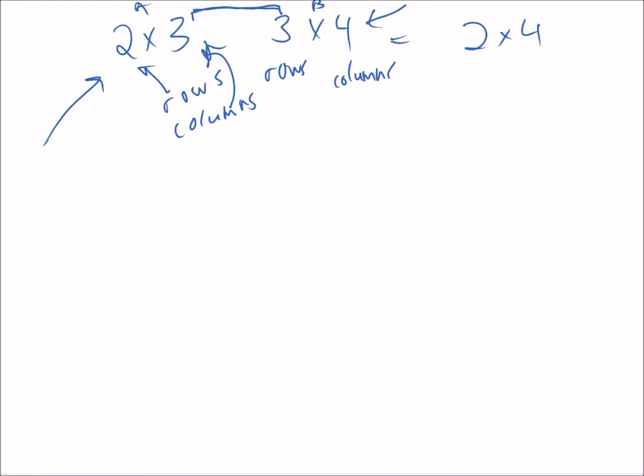When this happens, the resulting matrix will be 2 by 4. If this happens we say that the product, the answer, is defined. If this doesn't happen, if the number of columns in A does not match the number of rows in B, we say that it's not defined.